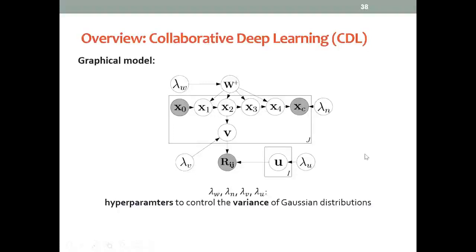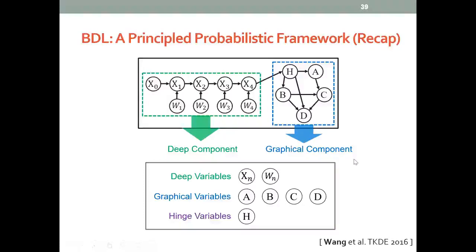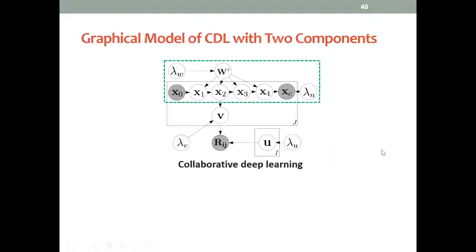Here is the overview of the graphical model. These lambdas are just some hyperparameters to control the variance of the Gaussian distribution. Recall that we have this overall Bayesian deep learning framework with a deep component and a graphical component. Correspondingly, we have this probabilistic autoencoder as the deep component.